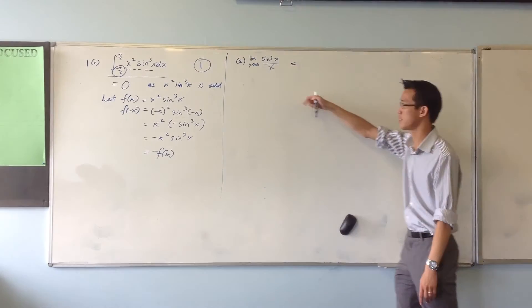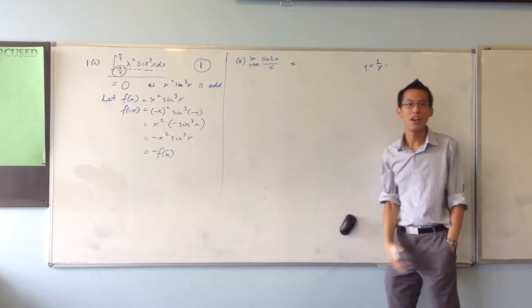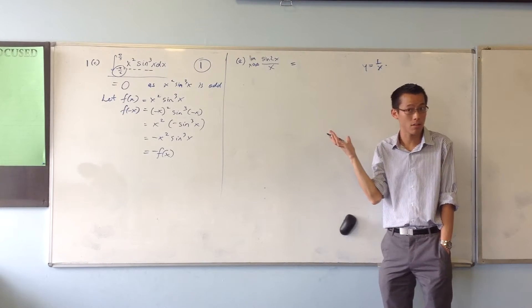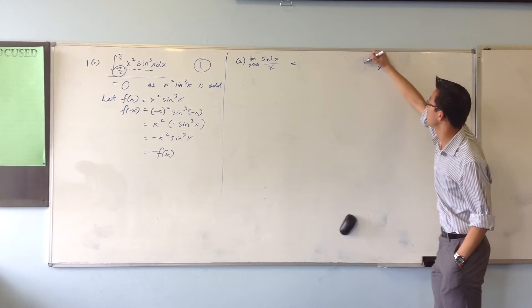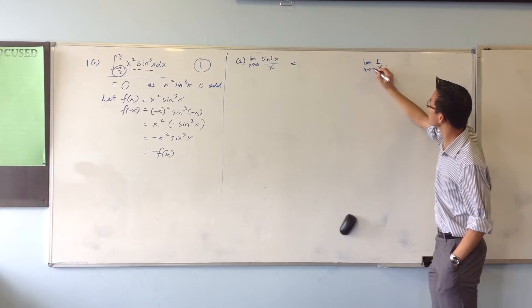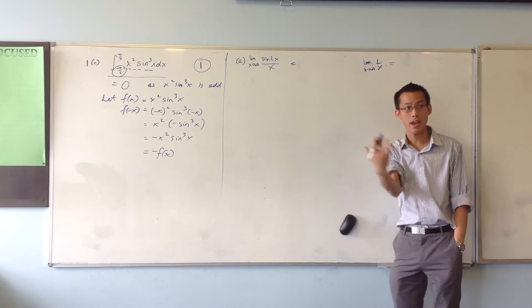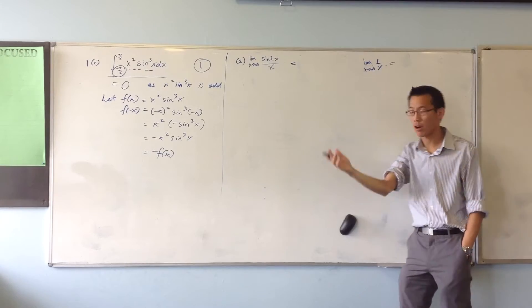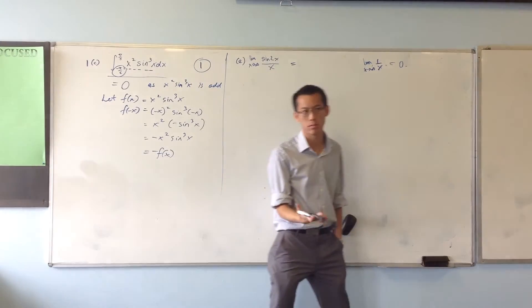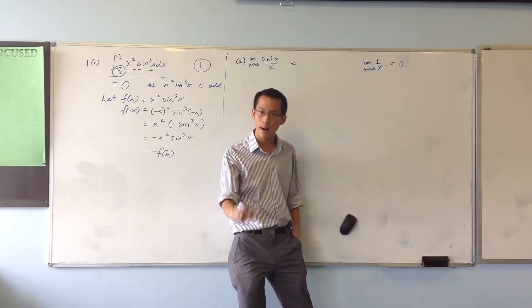If I gave you for instance y equals 1 over x, nice simple graph, you know what this looks like, right? So if I said, let's apply a limit to it, as x approaches infinity of 1/x, you'd all right away say zero.